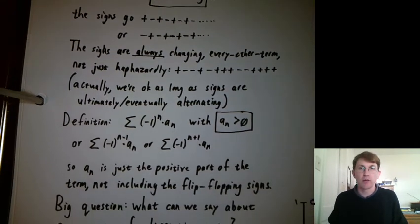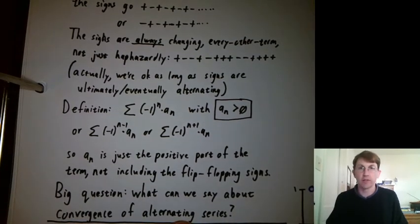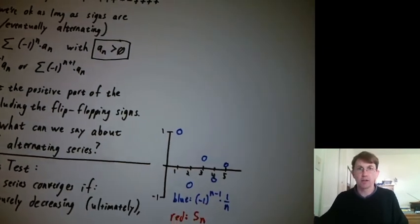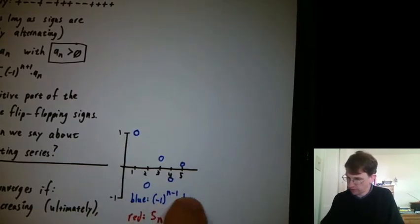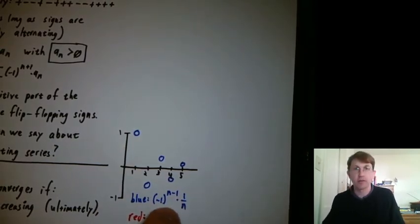We'll always think of a sub n as the positive part of the sums of the sequence. And then the big question is, what can we say about the convergence of alternating series? So let's take a quick example. Let's use the alternating harmonic series here. So I've got the blue is basically 1 over n, but with every other term being negative.